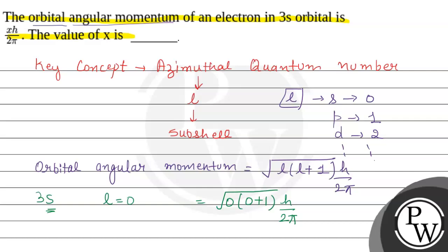According to the given question, here we can see h over 2π is given, and the value x we have to check out. This value multiplied by 0 will give overall 0. So it will be 0 h upon 2π. Basically, the orbital angular momentum for the 3s orbital will come out as 0 only.